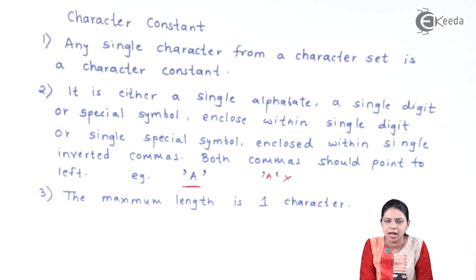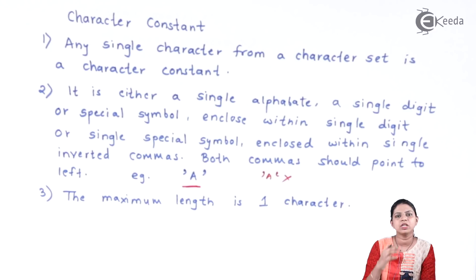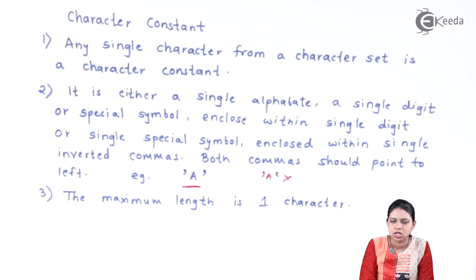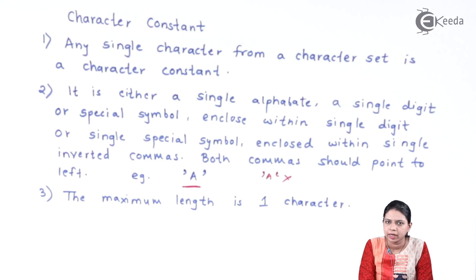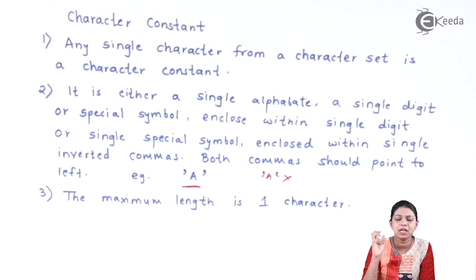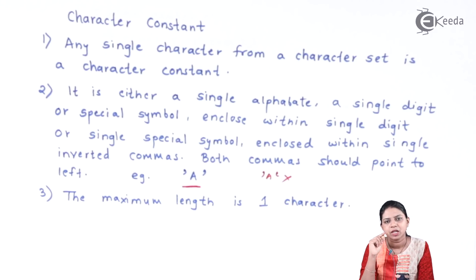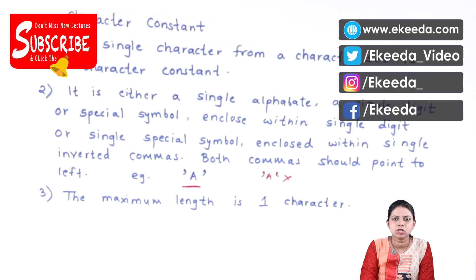To summarize: integers are numbers without a decimal point, with an allowable range of minus 32,768 to plus 32,767. If your answer goes beyond that range, use long integer. Floating point constants are numbers with a decimal point, with a range of minus 3.4 × 10 raised to 38 to plus 3.4 × 10 raised to 38; if beyond that range, use double data type. Character constants are any single character from the character set enclosed inside single inverted commas, where both commas should point to the left. These are the rules to construct integer, float, and character constants.